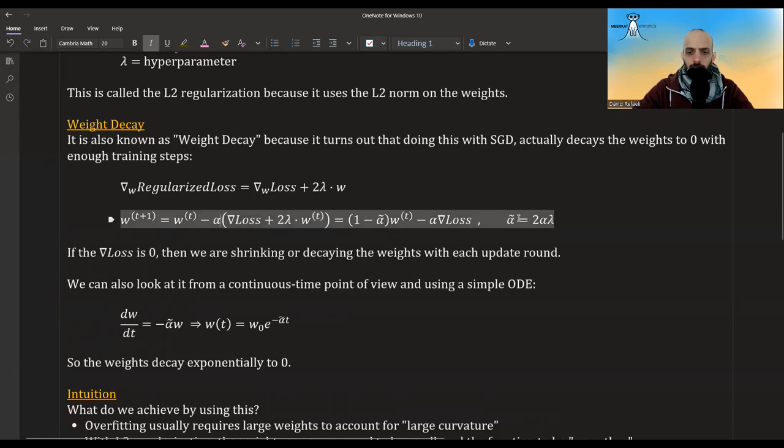So if we ignore the other loss, if we assume it's zero or anything, we see that the next weight is just equal to the old weight shrinking. Usually the learning rate is quite small, so this thing is smaller than one. You don't get a negative here usually.